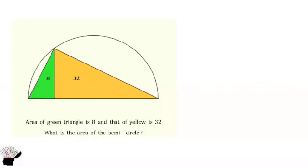Welcome to my YouTube channel. Let's consider this question. We have a semi-circle and we have two triangles. The area of the green triangle is 8 and the area of the yellow triangle is 32. We are supposed to find the area of the semi-circle. Could you figure out the solution? Just pause the video and give it a try.